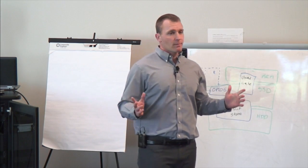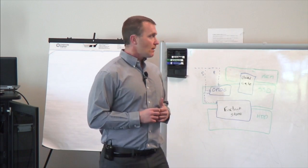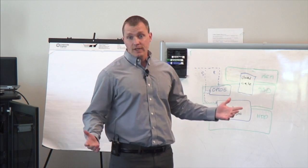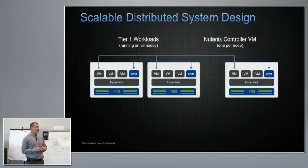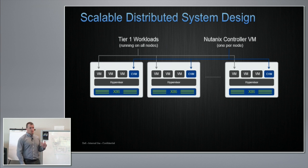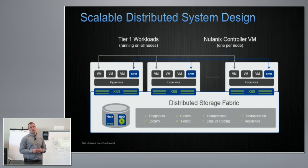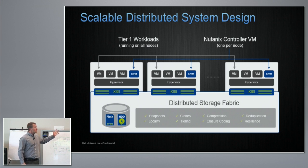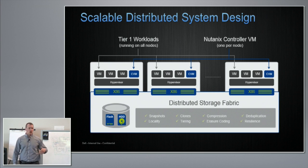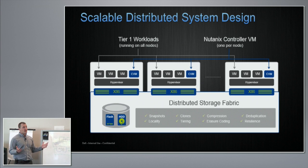From an architecture standpoint, we are a node-based architecture. You need at least three nodes to get going because it is distributed. Beyond that, you can mix and match and grow to whatever you need. There is a controller virtual machine that takes the local resources — both HDD and SSD — and pulls them together to form the distributed storage fabric. Those nodes talk over a 10-gigabit network typically; 1GbE is supported at limited scale.